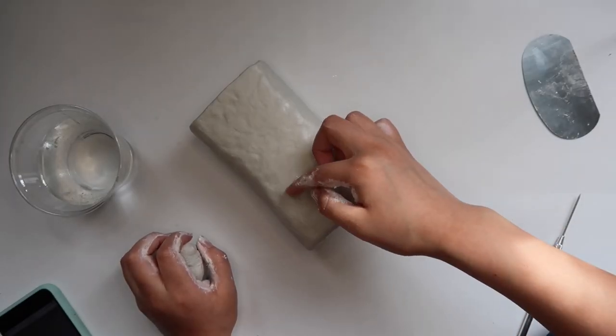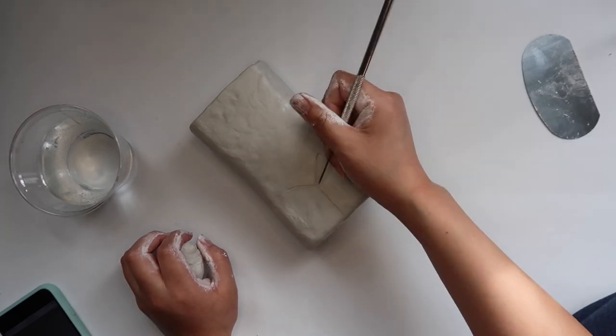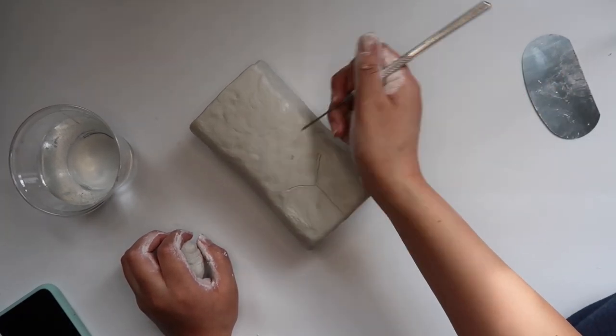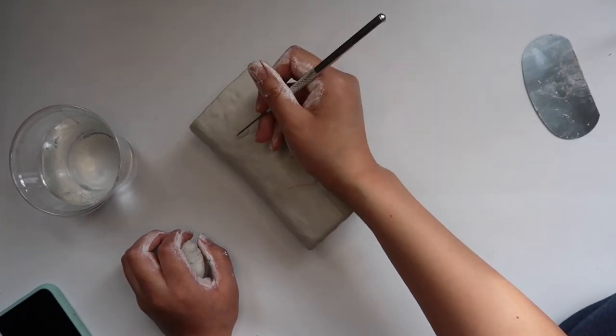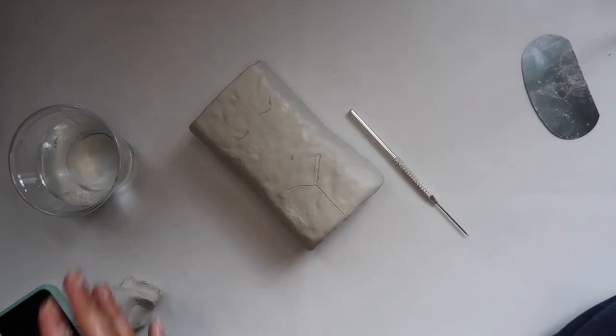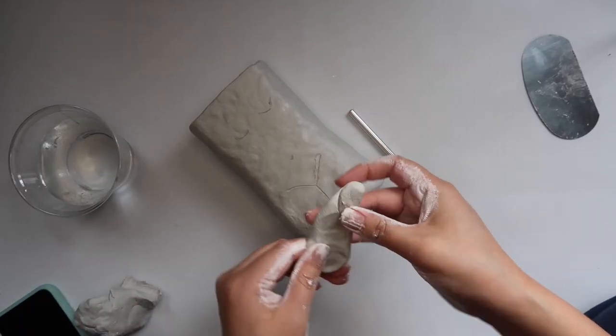So now I'm just gonna scrape off the extra from the bottom again. Before I start adding in more clay to define her body, I'm gonna outline where I want her legs to go, her belly button, and her boobs.